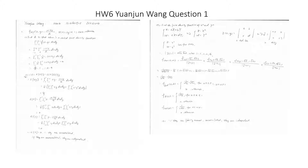Number four: find the joint density function of X² and Y². We use the transformation where Z = ax + by and W = cx + dy. Here Z = X² and W = Y². The Jacobian J(x,y) is the determinant of the matrix [a, b; c, d], which equals ad minus bc, giving us 4xy.